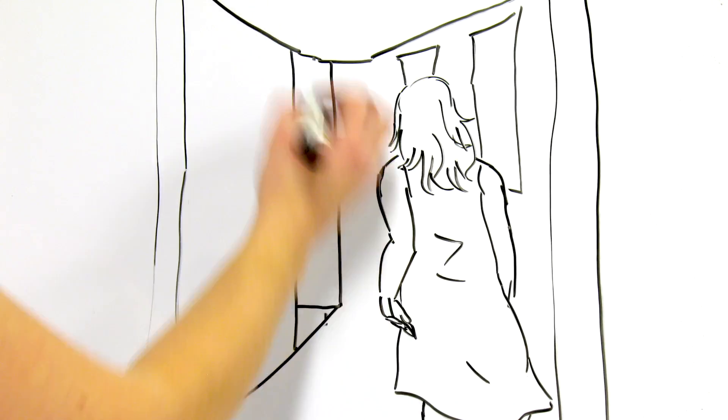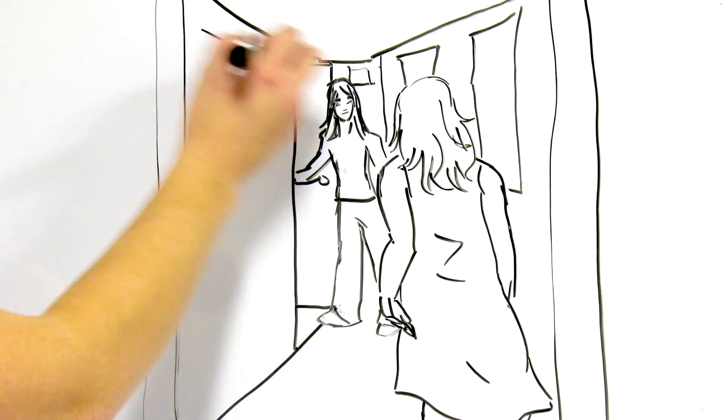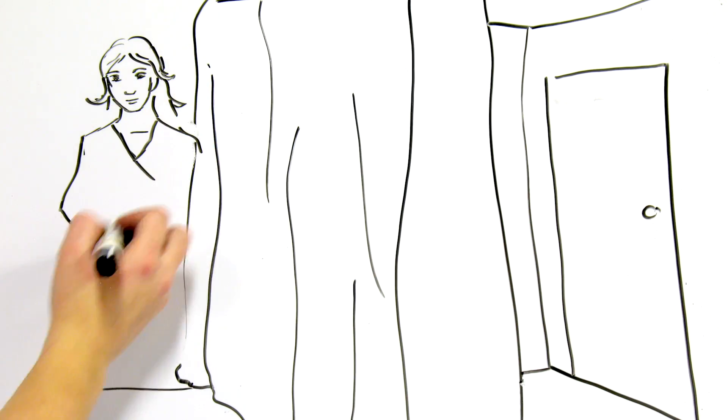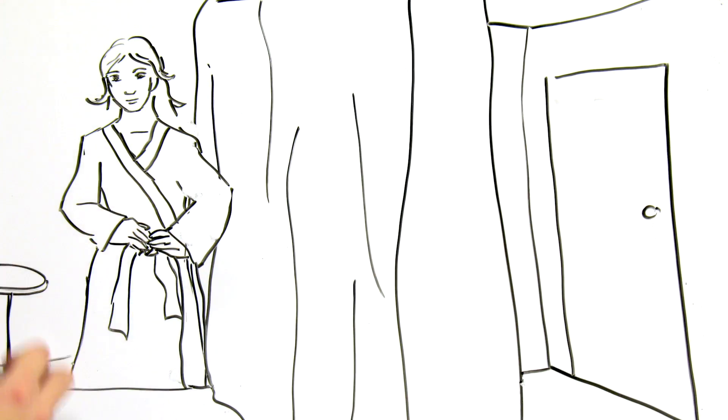Follow the technician to the thermal imaging suite. Once you're there, go behind the privacy screen. Put on the robe provided by the center.